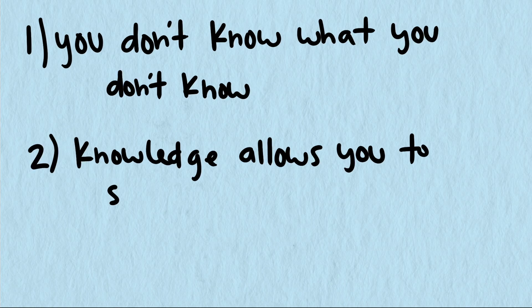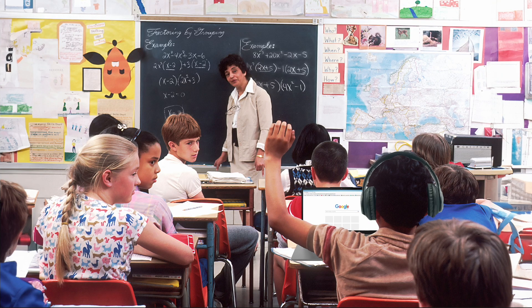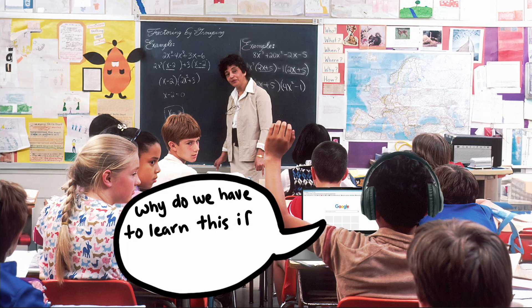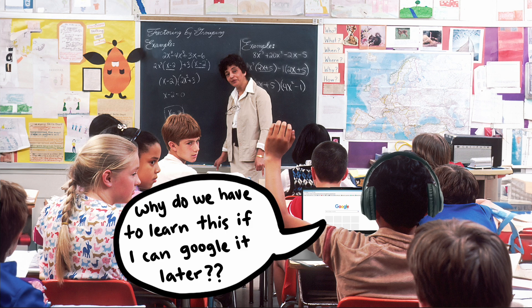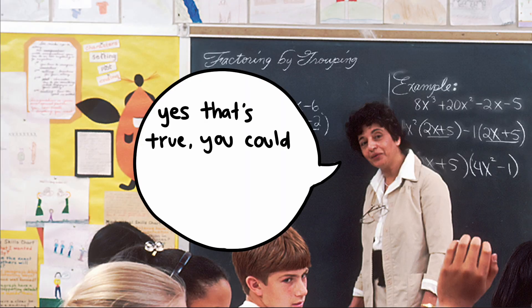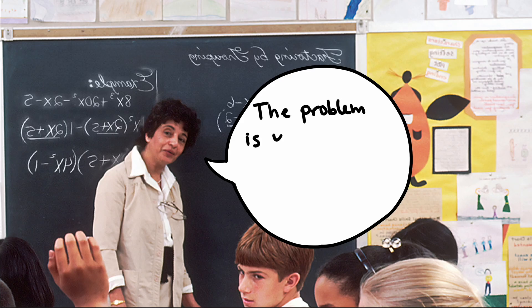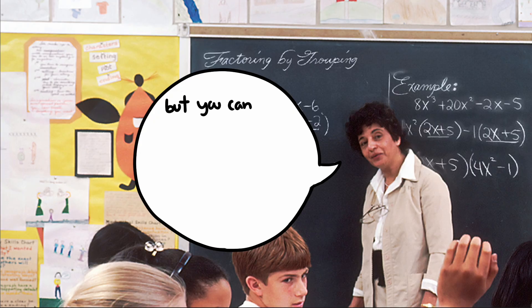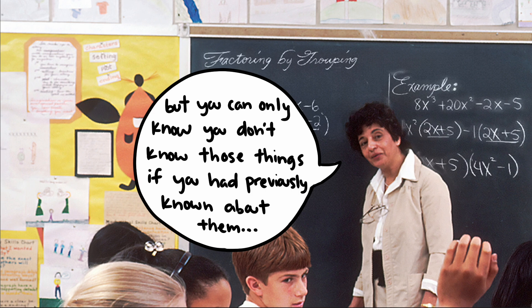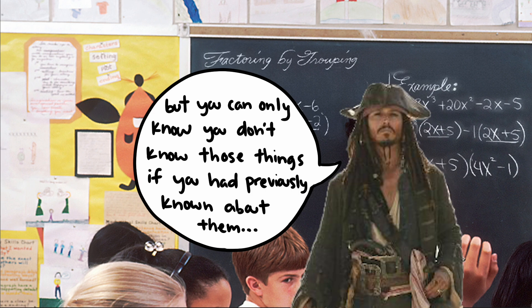These two previous ideas are connected to one final point, a complaint that comes up a lot in school. Students often complain that they have to learn things or memorize things that they could just look up. Why learn that formula or theorem or definition? Can I just look it up later if I need it? Well, students certainly can look them up. That's not the point I'm debating. I look up information like that all the time. The problem is that you can only look up things that you know you don't know. But you can only know that you don't know these things if you had previously known about them. I know, now I'm sounding a bit like Jack Sparrow.